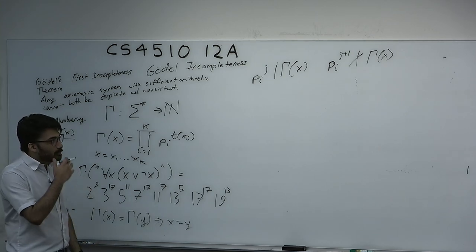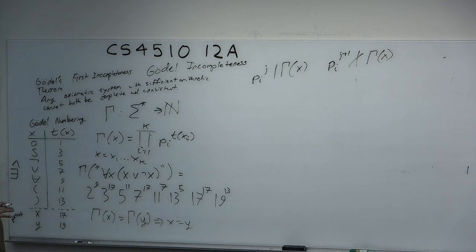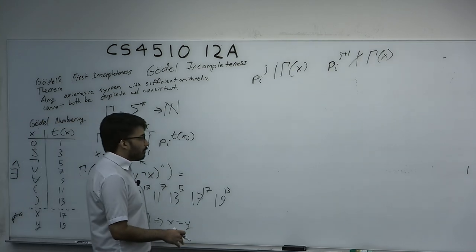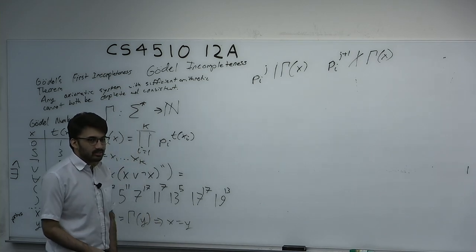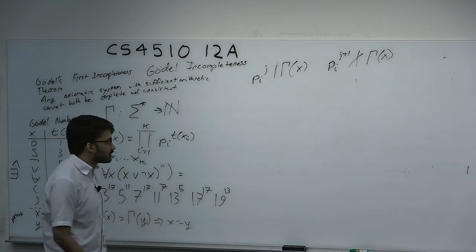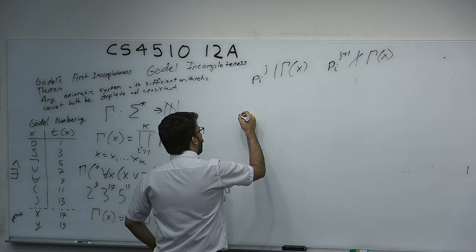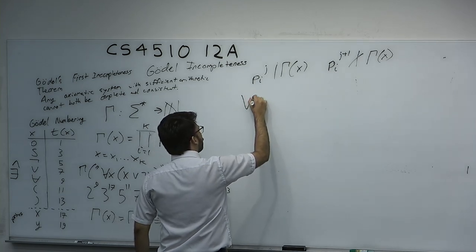He comes up with 46 different formulas. Two of them are important here. He's reinventing a computer by doing this.